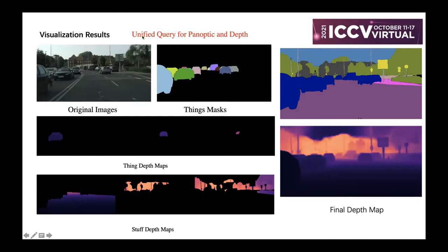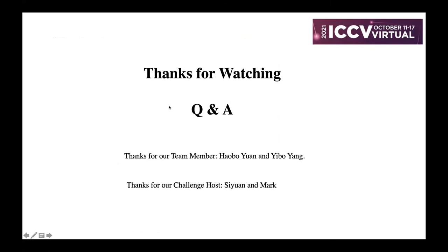Here is our visualization result. We show the unified query for both panoptic and depth outputs. Here is the things mask, here is the segmentation map, here is the things depth map, and here is the stuff depth map — each depth map corresponding to the things and stuff masks. We paste these depth maps into the final depth map. Thanks for watching, and thanks to our team members Haobo and Yifan, and also to the challenge organizers.